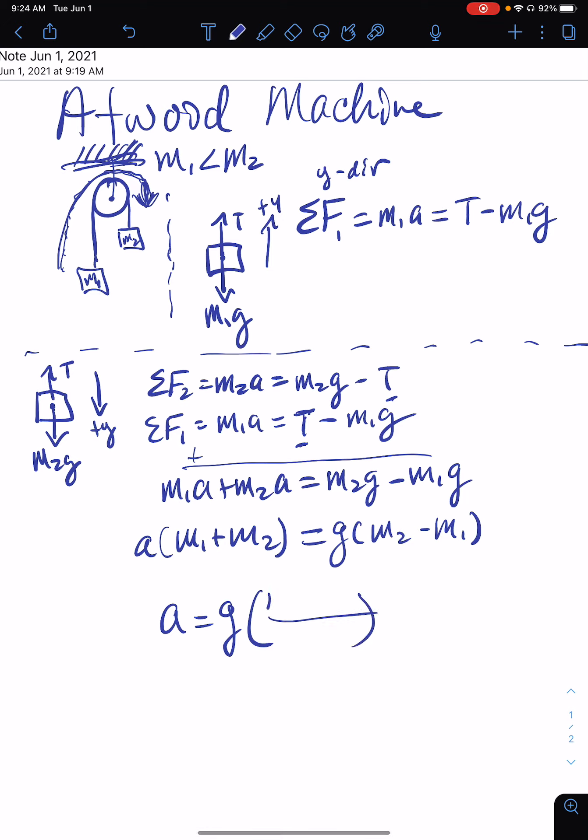And we have a final answer here: acceleration of the system is equal to gravity times the ratio of the difference of the masses over the sum of the masses. Don't forget it, so it's difference over sum. For the difference, it's always big minus small, and then over total.